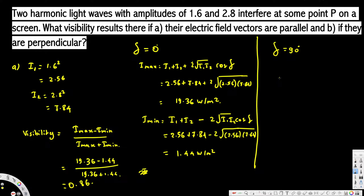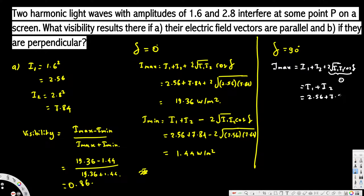Now let's look at the second case where the vectors are perpendicular, so the angle is δ = 90°. For Imax: Imax = I1 + I2 + 2√(I1·I2)·cos(δ). Since cos(90°) = 0, the last term vanishes, giving Imax = I1 + I2 = 2.56 + 7.84 = 10.4 W/m².